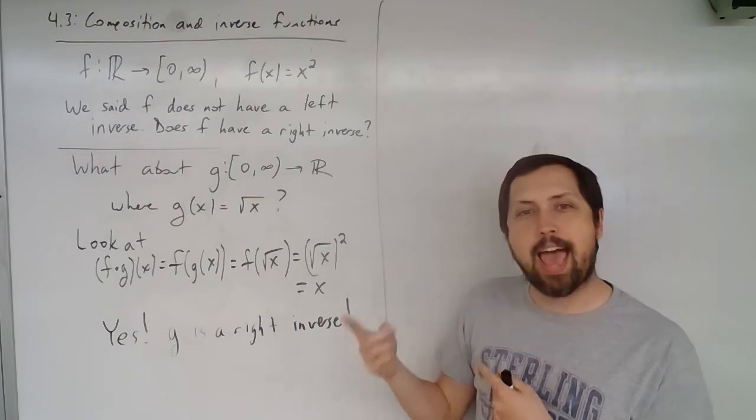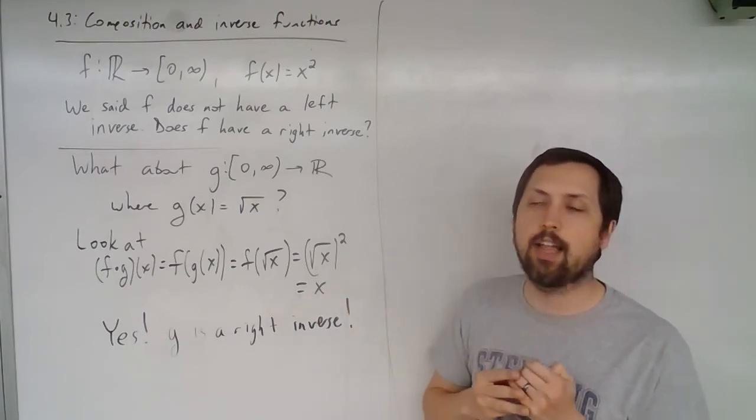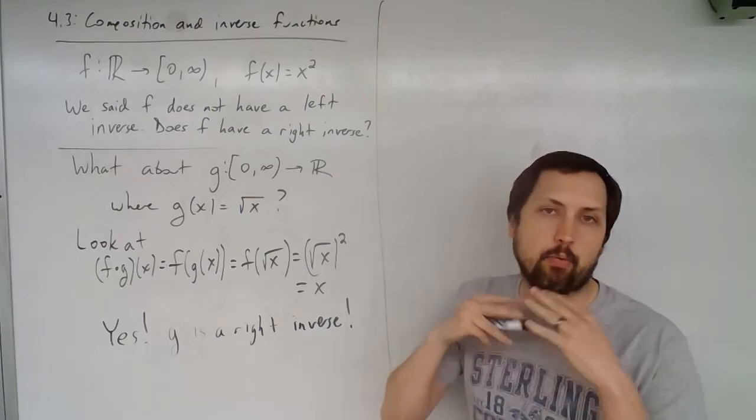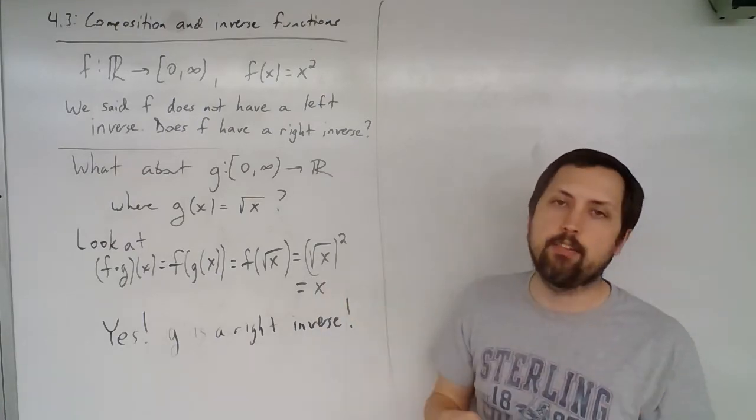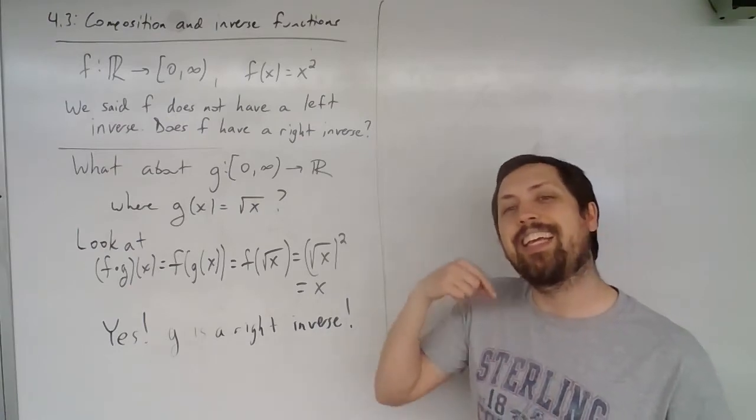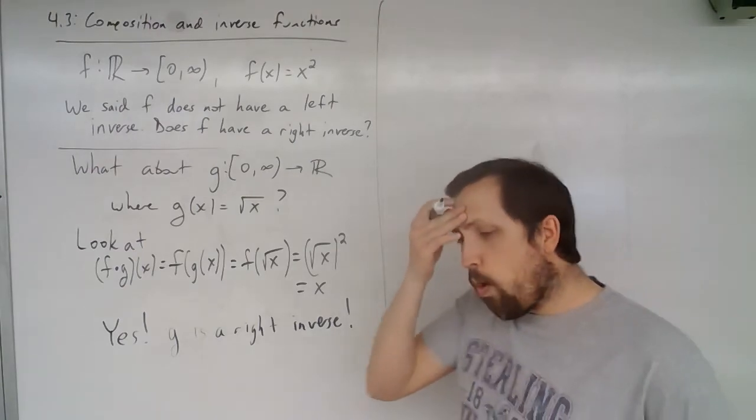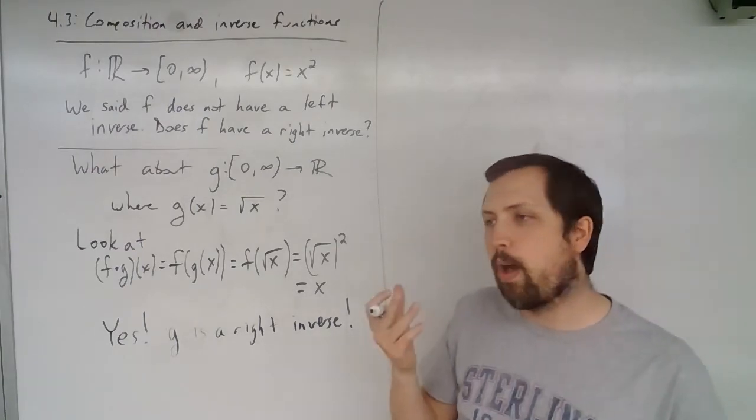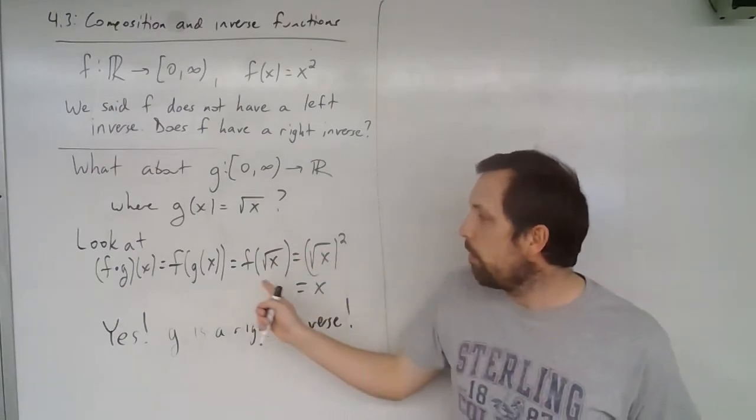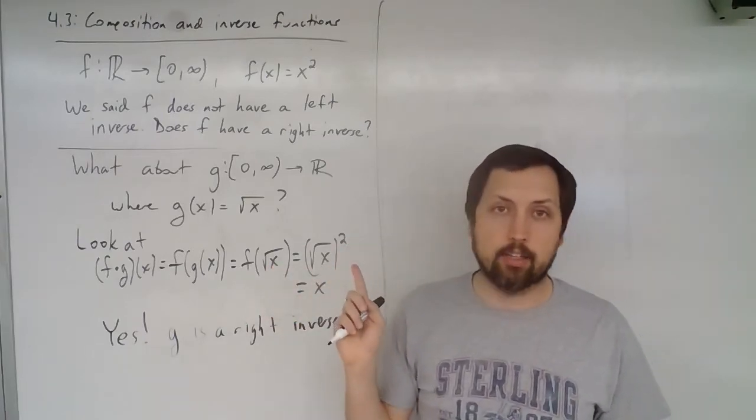So when we've done this in the past with looking at this in algebra, pre-calculus, those types of classes, we only ever found one and then we're like, great, that's my inverse. But because we're looking at left and right inverses, can we possibly have another? And so let's see, what else would be another way that if I was to think about plugging something into a square, that I could still get back x?